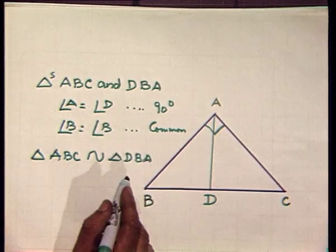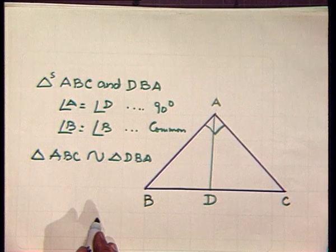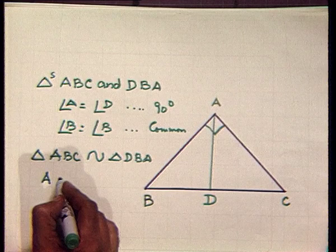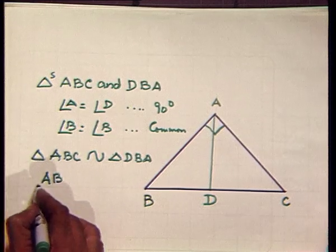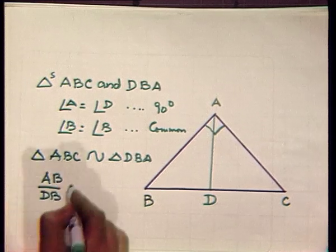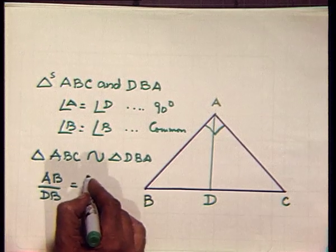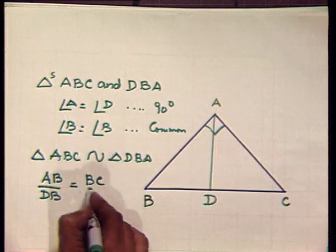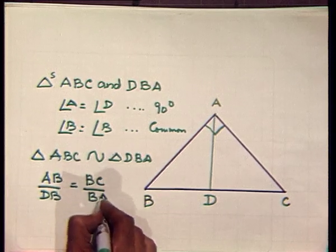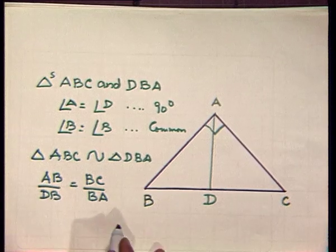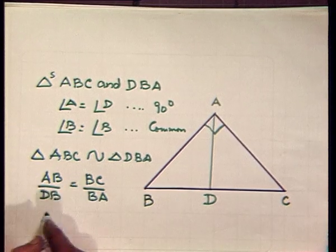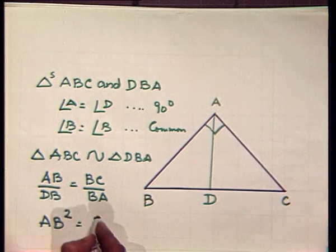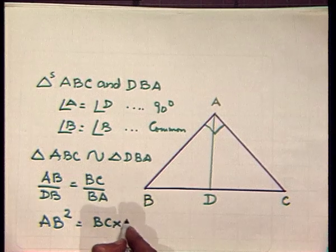Since the triangles are similar, their corresponding sides must be proportional — that is, AB/DB = BC/BA. If we cross multiply this, we get AB × AB, that is AB² = BC × BD.